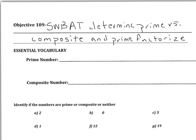Hello, mathematicians. Today's video is on objective 109, which is prime and composite numbers. Our objective for today is: students will be able to determine prime versus composite and prime factorize numbers. If you need to, go ahead and pause the video so you can copy down our objective for today.